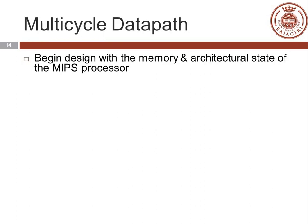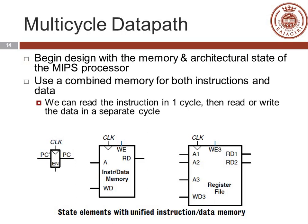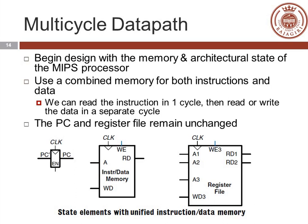We will begin the design with memory and architectural state of the MIPS processor. Here we will have a program counter. Compared to single-cycle processor, here we have a combined instruction and data memory and a register file. In the combined memory, we can read the instruction in one cycle, then read or write data in a subsequent cycle. The program counter and register file remain unchanged compared to single-cycle design.